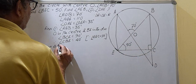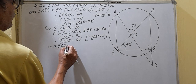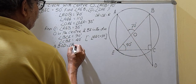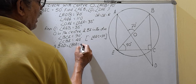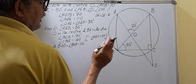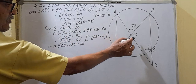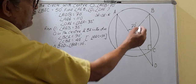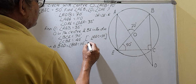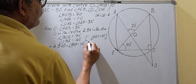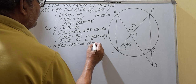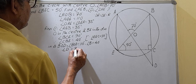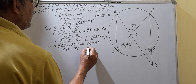Now in triangle BOD: angle BOD = 110 degrees, because a straight line is 180 degrees and angle AOB is 70 degrees, so 180 - 70 = 110 degrees. From this, the calculated angle is 40 degrees.